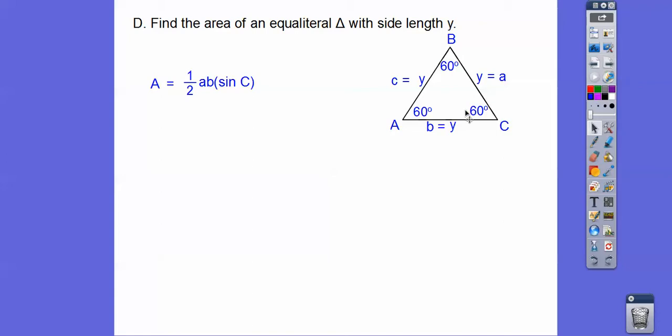So we could have done B, C sine of A, or we could have done A, C sine of B. I just chose A, B times the sine of C. It doesn't matter, which is the 60 right there. So if we plug in 60, the sine of 60 is about 0.866. Well, where does that come from?